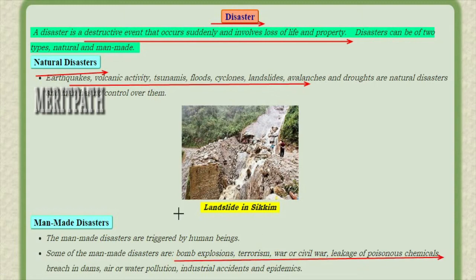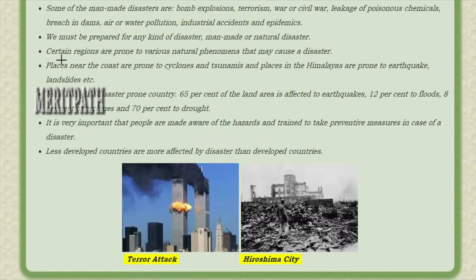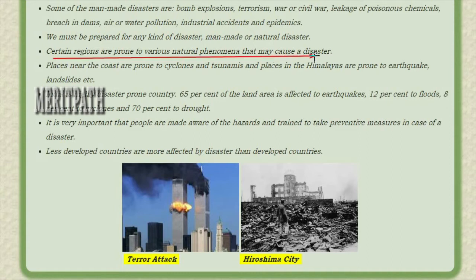Here is an image of a landslide in Sikkim, which is an example of a natural disaster. Certain regions are prone to various natural phenomena that may cause a disaster. Places near the coast are prone to cyclones and tsunamis, and places in the Himalayas are prone to earthquakes and landslides, etc.